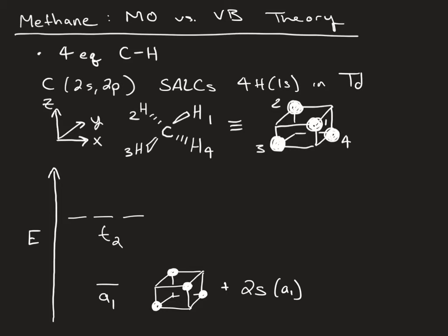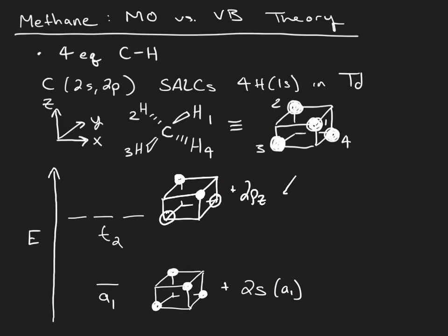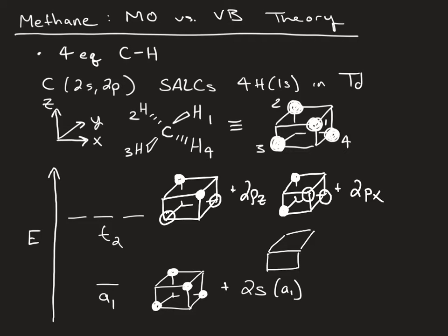Higher in energy you have some out-of-phase combinations. One that looks like this will overlap with the 2pz. Another one that's going to look like this will overlap with the 2px. And then another one that's going to look like this will overlap with the 2py.